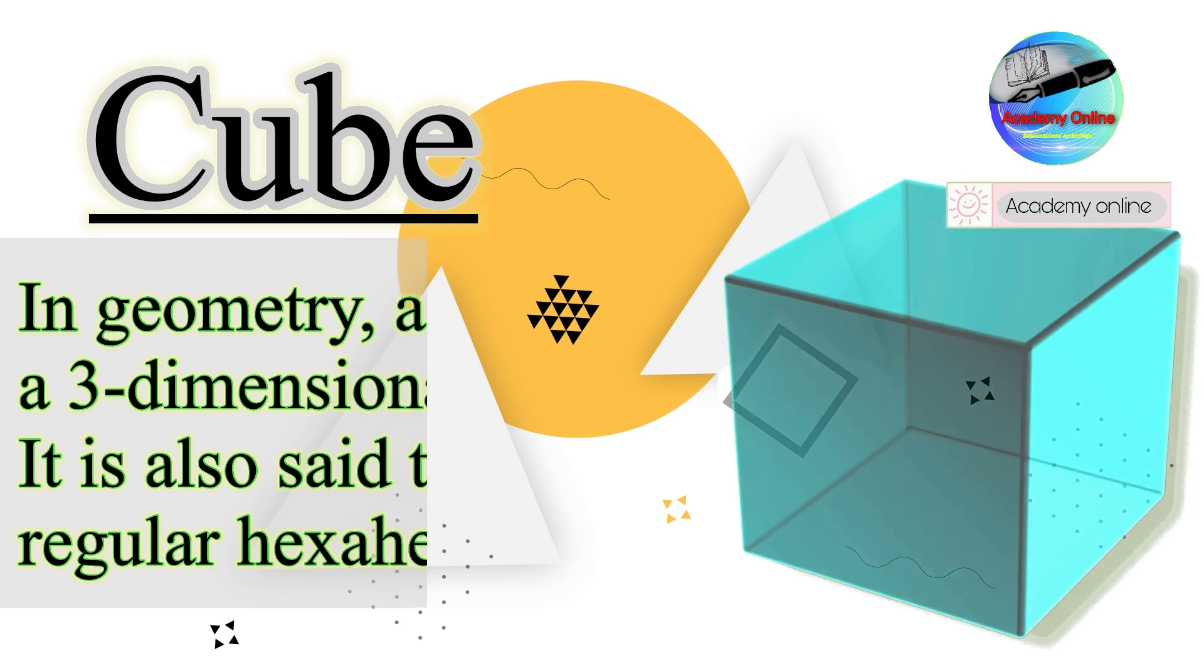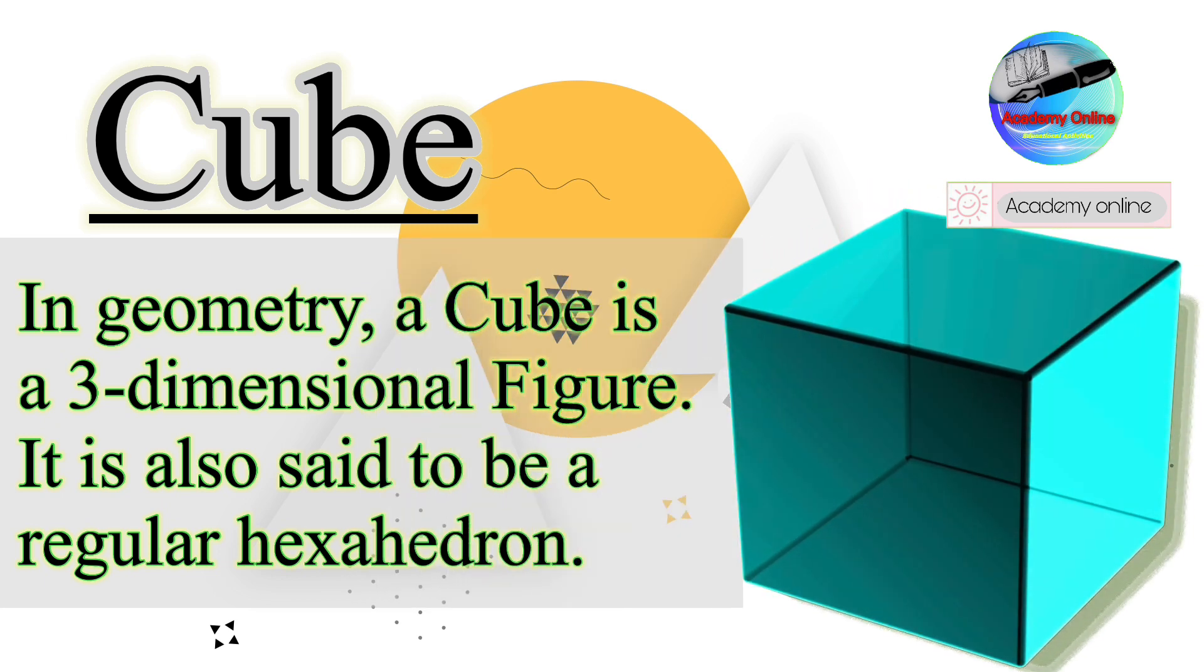Cube. In geometry, a cube is a three-dimensional figure. It is also said to be a regular hexahedron.